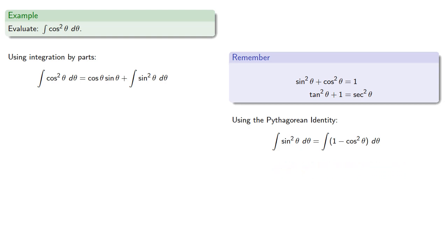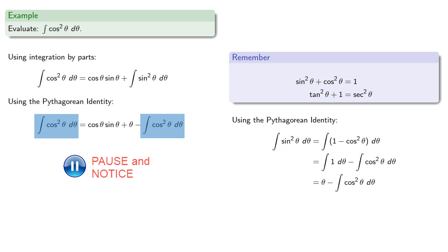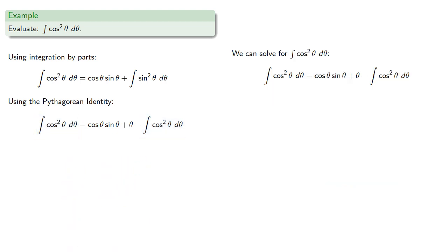And we can simplify it and rewrite our integral as... And we can evaluate the first integral. And notice we have a cosine squared theta on both sides of the equation. So we can solve for the integral of cosine squared theta.